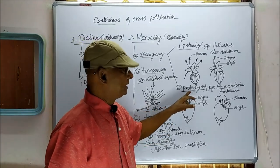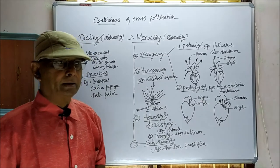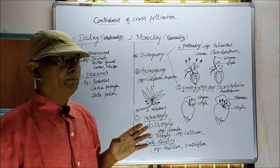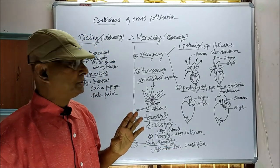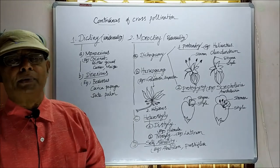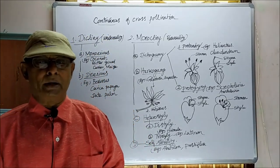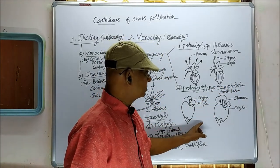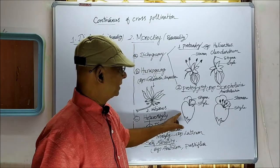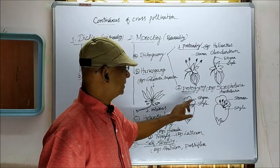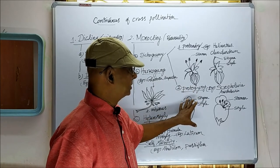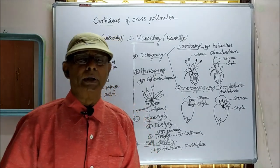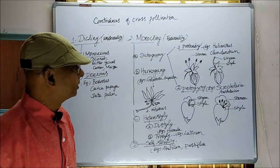The second condition is protogyny. In some plants, bisexual flowers are produced, but in the bisexual flower, the stigma matures first — earlier than the stamen. In the case of Scrophularia, these two diagrams show that the stigma matures first, and only later the stamen matures. That is the condition as far as protogyny is concerned.